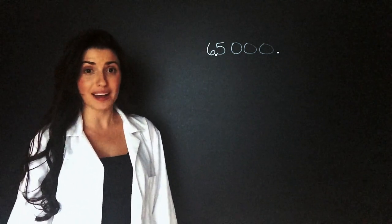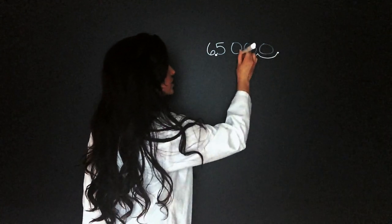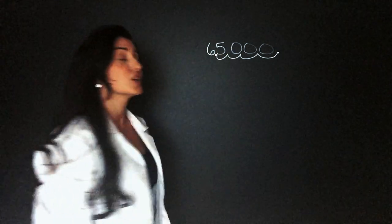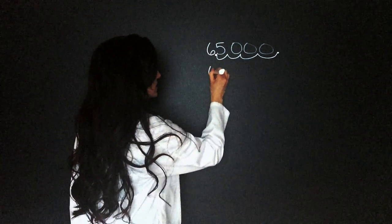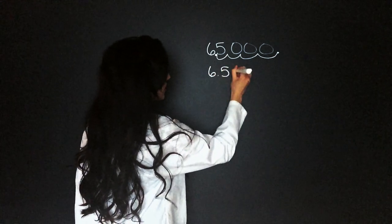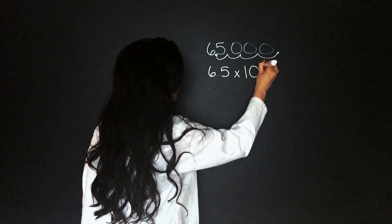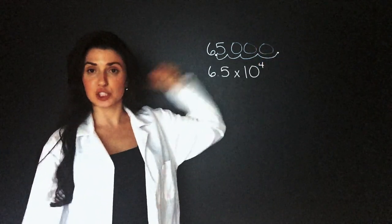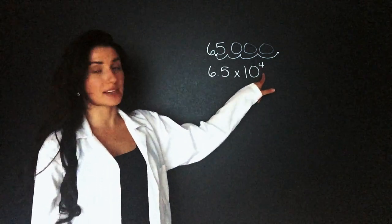We need to keep track of how many spaces the decimal is moving — we count 1, 2, 3, 4. So in scientific notation, this would be 6.5 times 10 to the power of 4. Anytime you're moving the decimal to the left, you are using a positive exponent.